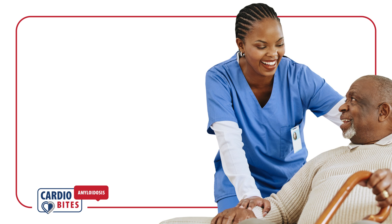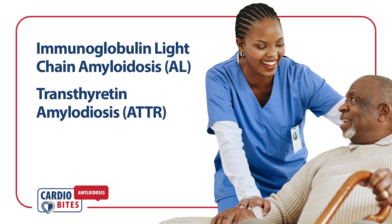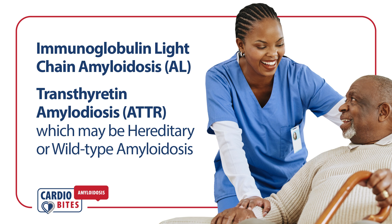In summary, the most common types of cardiac amyloidosis are AL or ATTR amyloidosis. ATTR amyloidosis can be further subclassified based on the presence or absence of a pathogenic mutation. It can be classified as either hereditary ATTR or wild type ATTR.